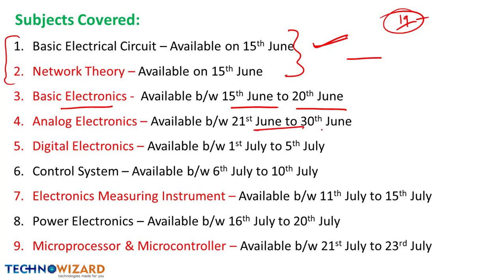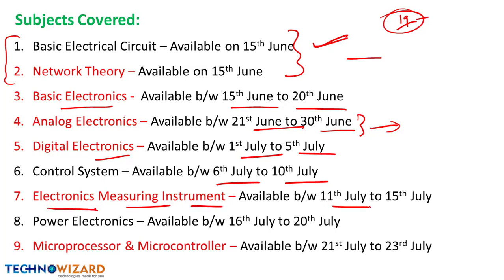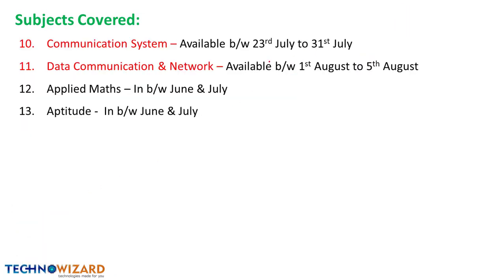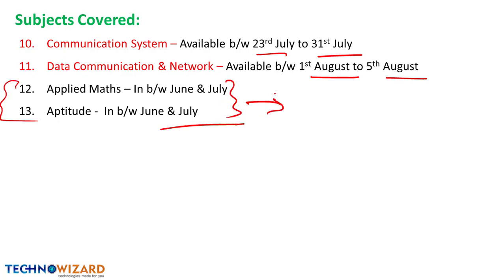Analog Electronics will be covered from 21st June to 30th June — I have taken more time here because analog is very dense content and needs well-structured videos with examples, numericals, and previous year questions. Digital Electronics: 1st July to 5th July. Control Systems: 6th July to 10th July. Electronic Measuring Instruments: 11th July to 15th July. Power Electronics: by 16th July. Microprocessor: by 21st July. Communication Systems: 23rd July to 31st July. Data Communication Networks: 1st August to 5th August. Applied Math and Aptitude will be provided in between June and July.